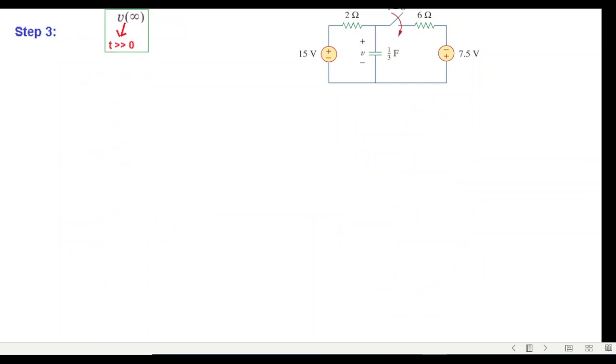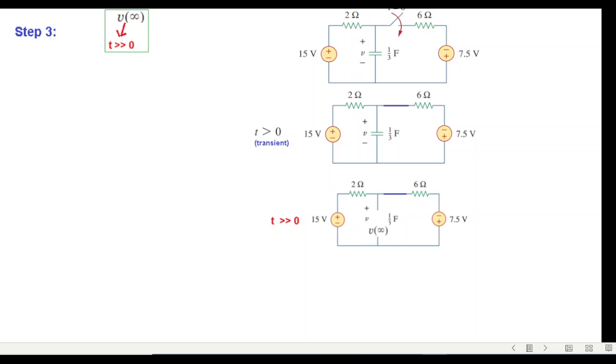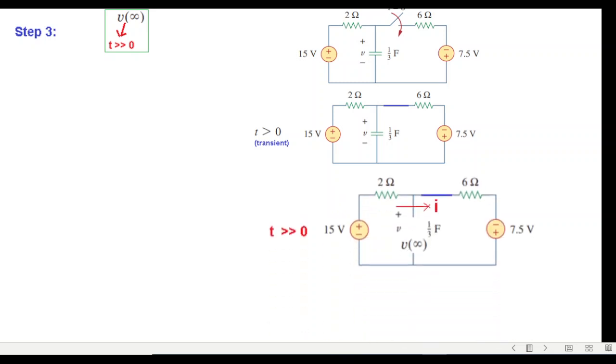For the third portion, t greater than zero, the capacitor is open. I'll calculate this with the help of KVL. Using KVL: minus 15 plus 2i plus 6i minus 7.5. Solving, i equals 22.5 divided by 8.